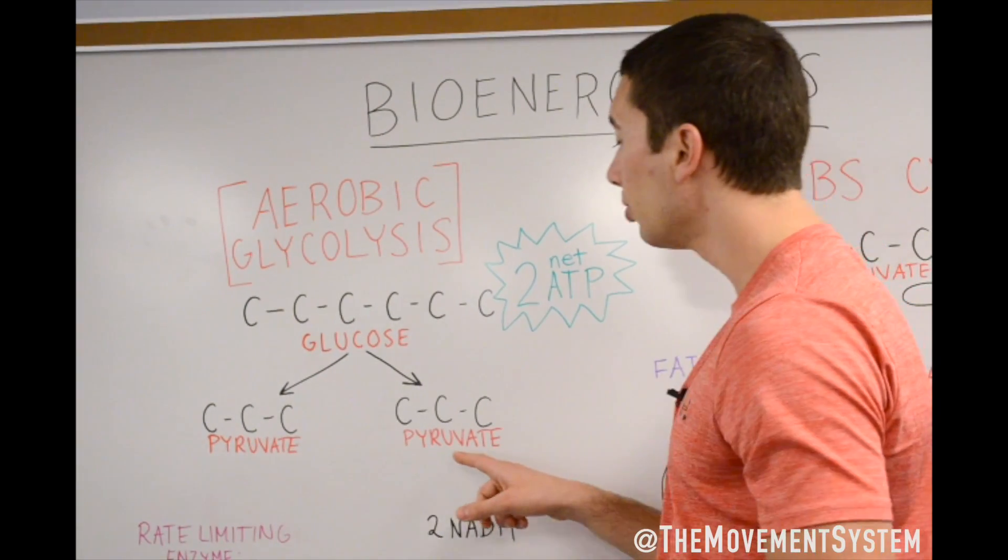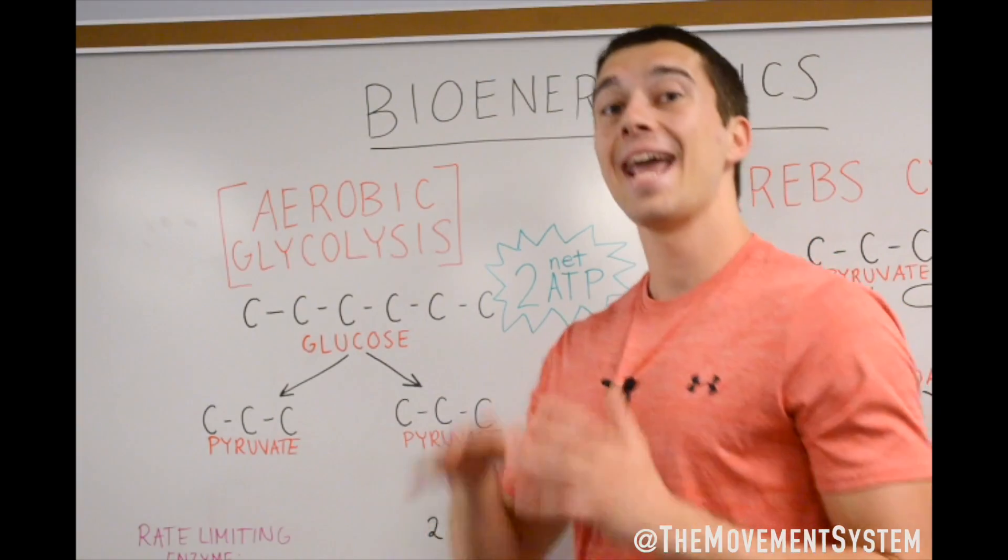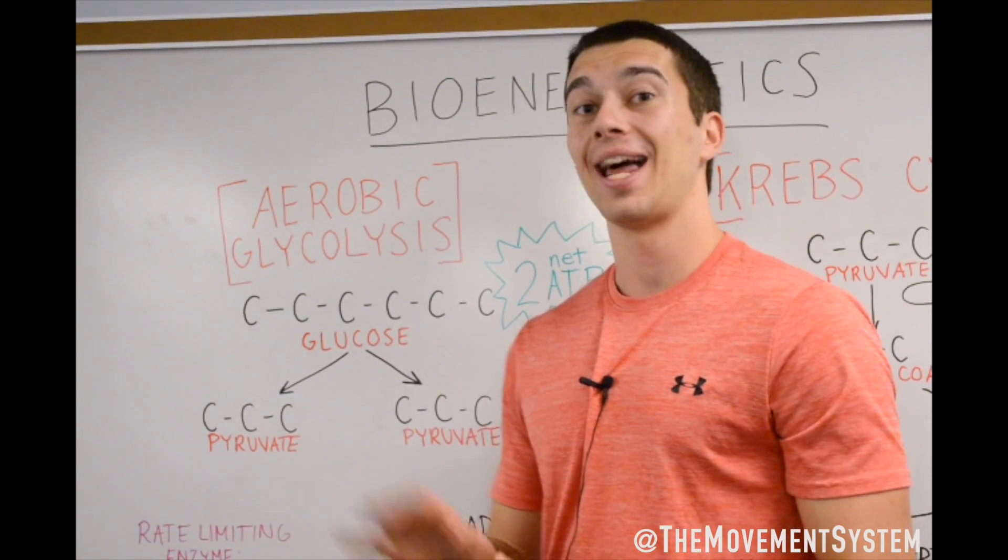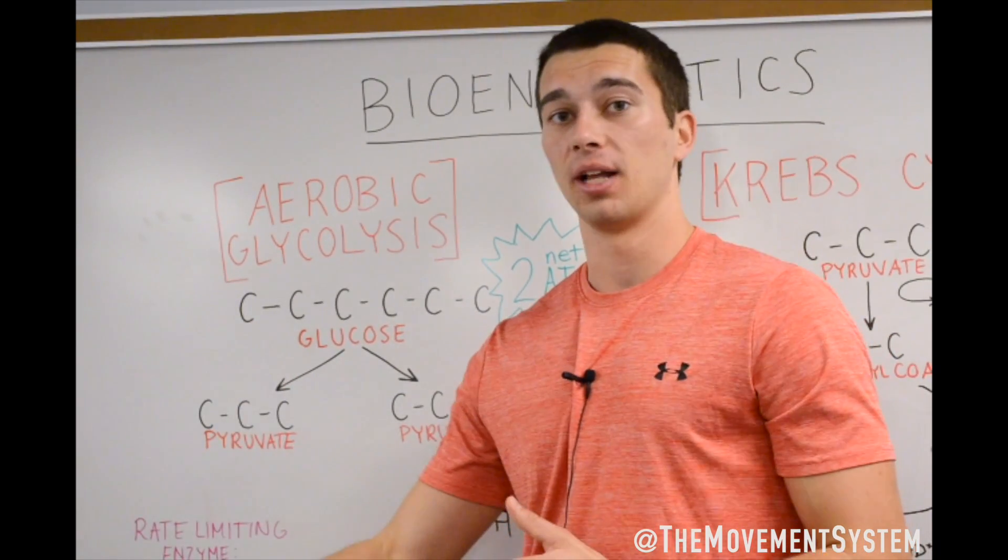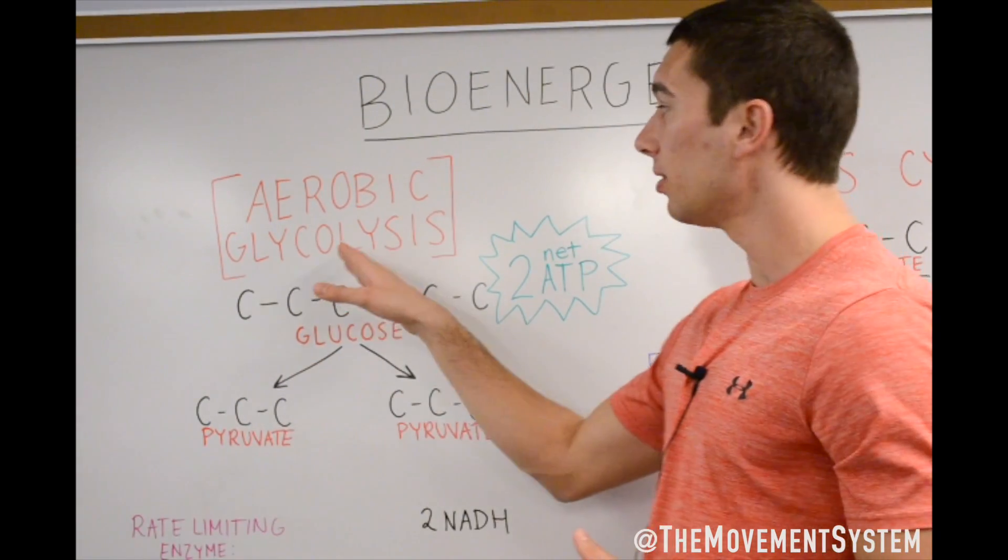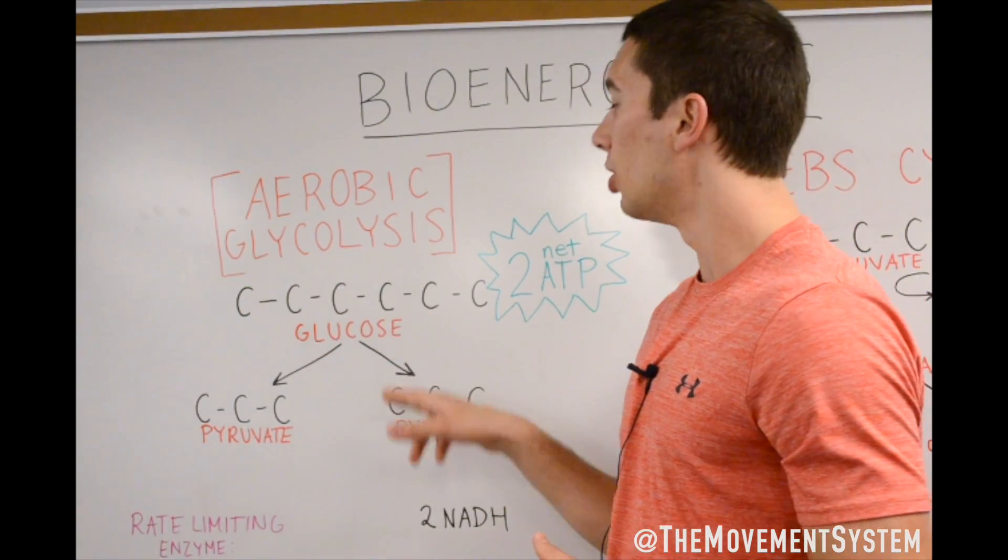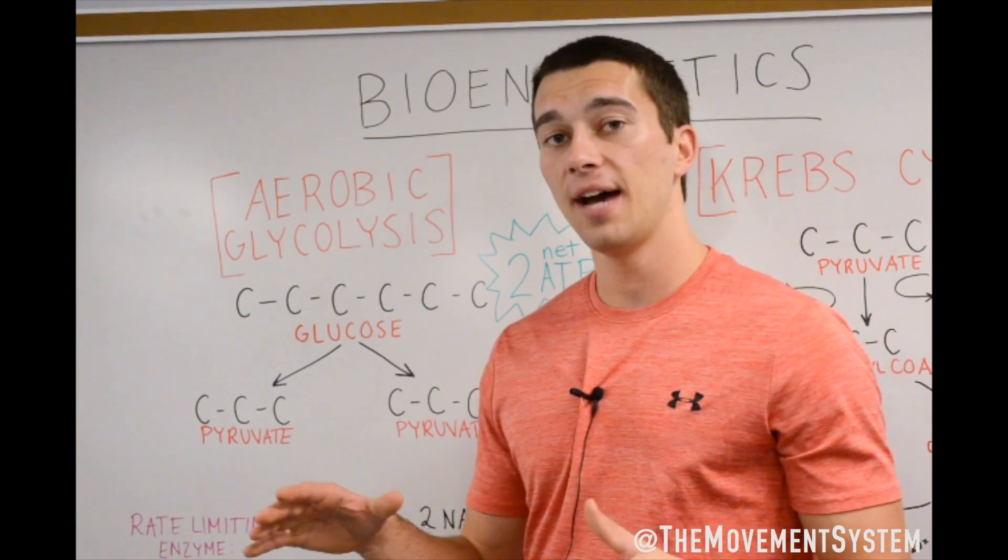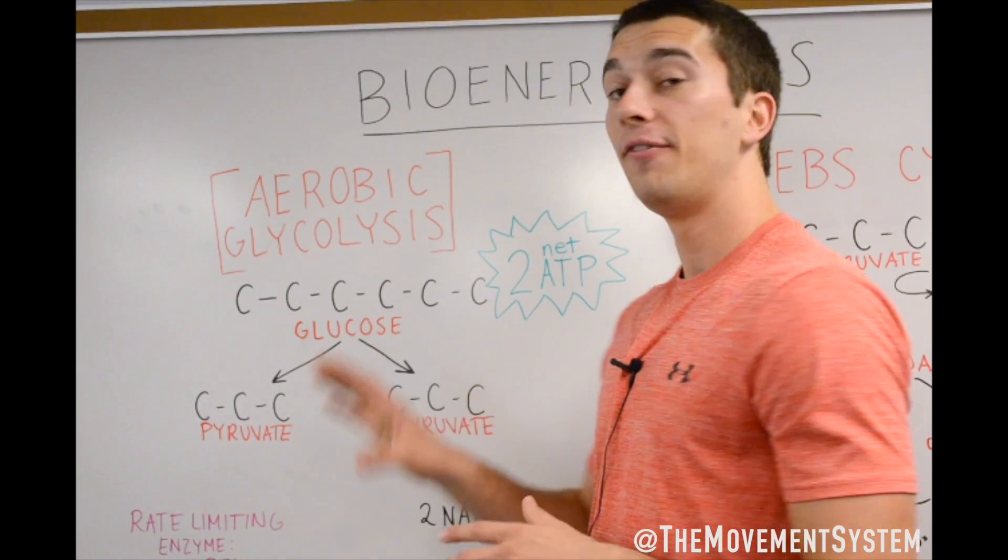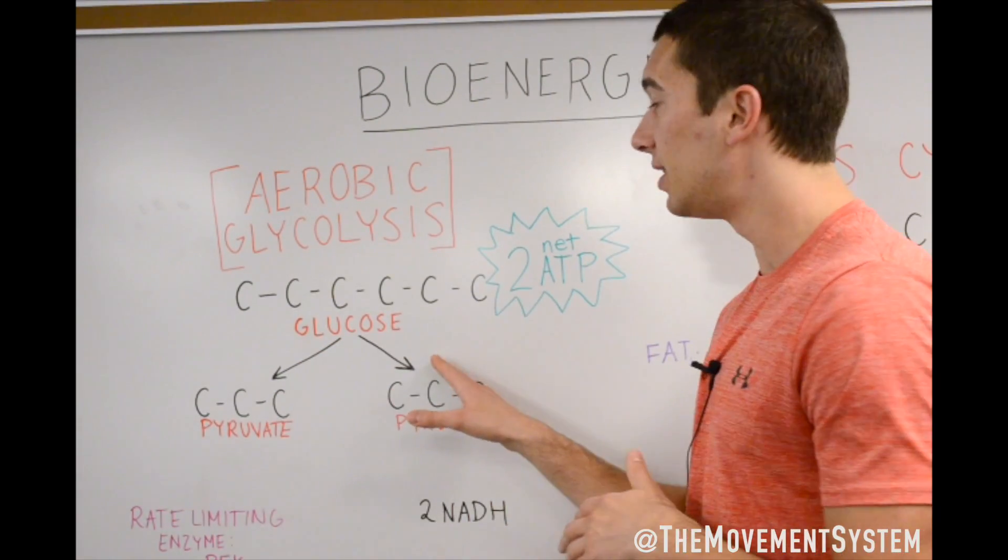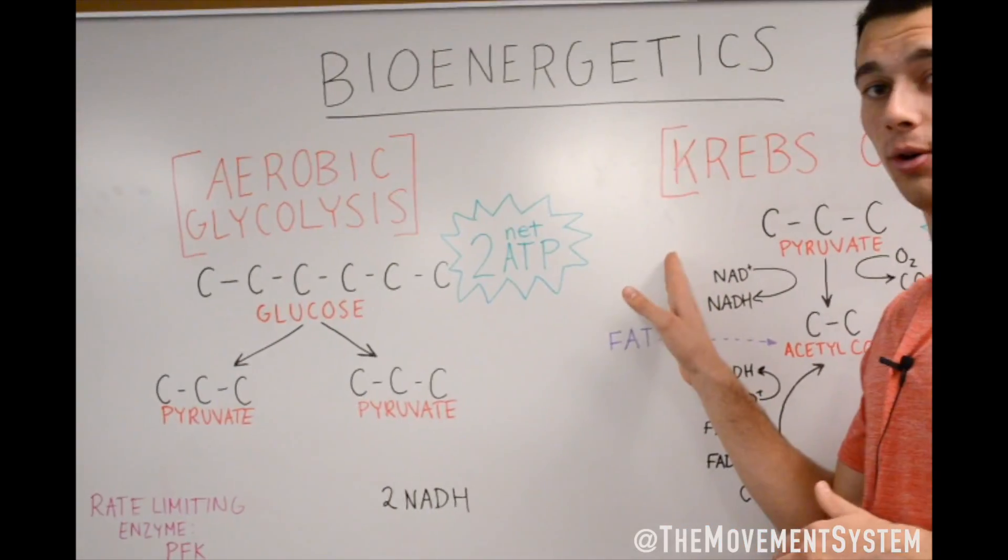So that pyruvate molecule, if it's anaerobic, is going to turn into lactate. That would be the end product of anaerobic glycolysis. You would just go from the same thing, from glucose to pyruvate, and then if you didn't have oxygen, you would end up with lactate. Now, if we do have oxygen, that's when we're going to continue on to the Krebs cycle.